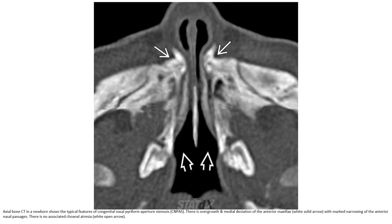This is the axial bone CT in a newborn. The typical feature of congenital nasal pyriform aperture stenosis is overall medial deviation of the anterior maxilla with marked narrowing of the anterior nasal passage. There is no associated choanal atresia.